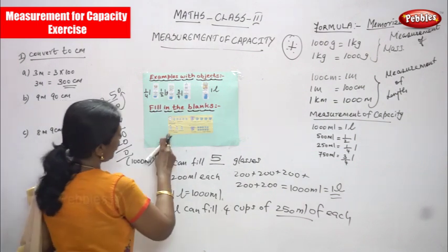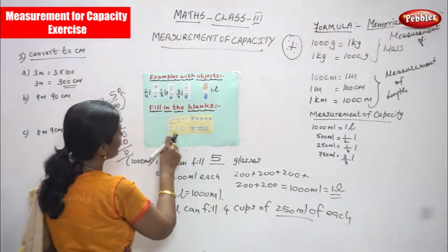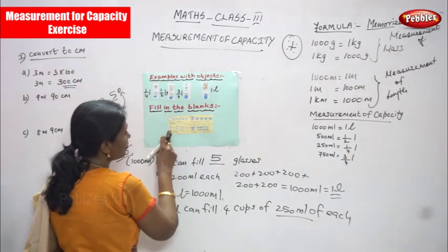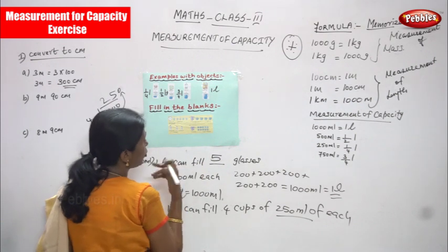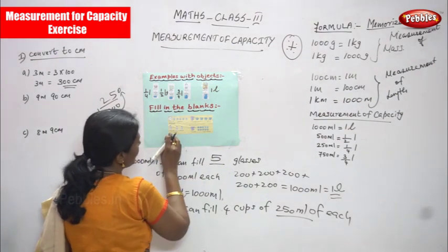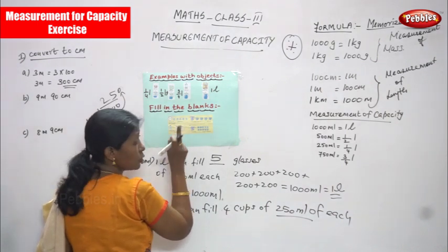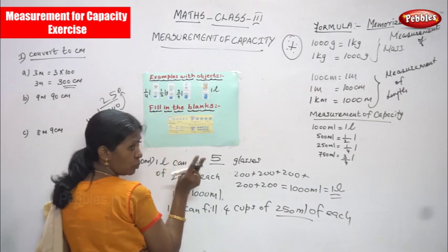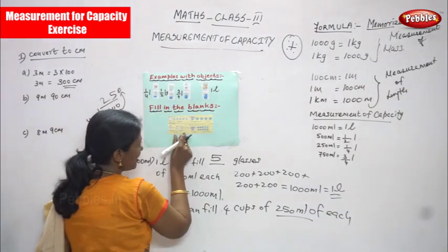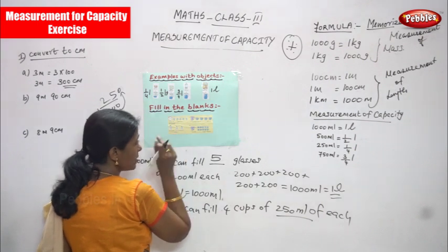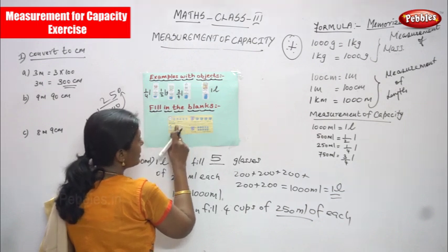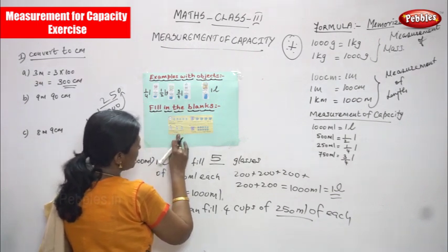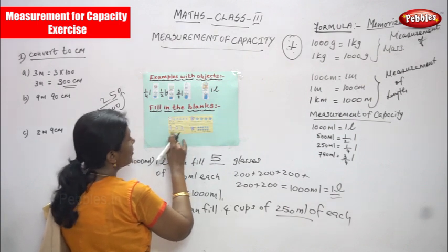The third question is: 1 liter can fill dash bottles of dash ml of each. 1 liter can fill dash bottles of dash ml of each. This is a 1 liter bottle — 1 liter water bottle. They are given 2 diagrams of bottles. Each diagram is a 500 ml bottle. This is a 1 liter water bottle and they have given 2 diagrams — 2 bottles — each with 500 ml written on them. So 1 liter can fill dash 2 bottles of 500 ml each.